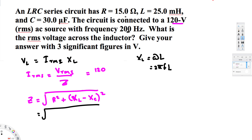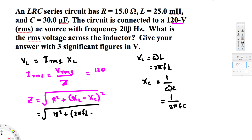We have resistance R equal to 15 ohms, so 15 squared. For XL, the inductive reactance, we use 2πfL instead of omega L since we have the frequency. For XC, the capacitive reactance, the equation is 1 over omega C, which we write as 1 over 2πfC. So the impedance formula becomes: square root of 15 squared plus the quantity 2πfL minus 1 over 2πfC, all squared.